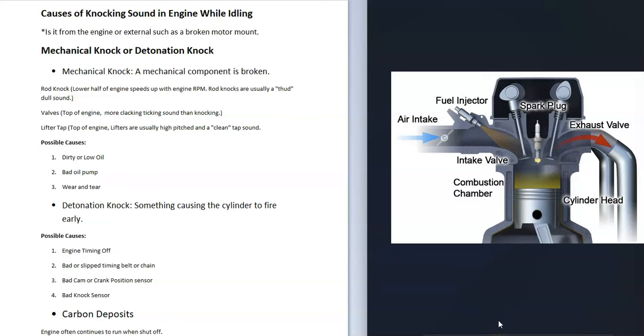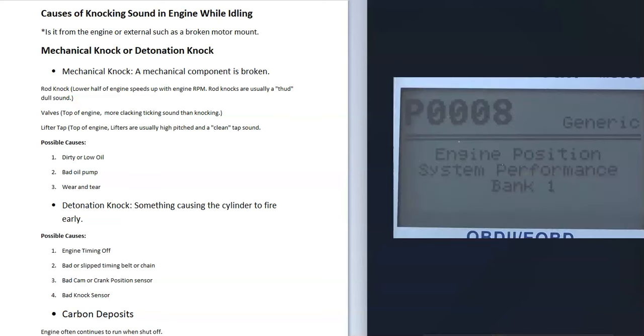The first thing to do to help determine if you have a mechanical knock or a detonation knock is to get an OBD2 scanner and scan the onboard computer for any possible error codes. The mechanical knock might not give you an error code, but a detonation knock will. For example, if you scan the onboard computer and get a P0008 code, this is usually something to do with a timing belt that slipped a notch or something like that where the crankshaft and camshaft aren't aligned up.